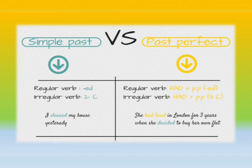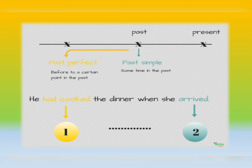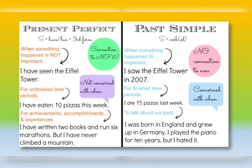The simple past versus the past perfect. Remember: simple past is a finished action in the past. The past perfect is an action that is finished before another action that is finished in the past. For example: I cleaned my house yesterday. She had lived in London for three years when she decided to buy her own flat. He had cooked the dinner when she arrived. What happened first? He had cooked the dinner — this is something that happened before another action in the past, which in this case is 'she arrived.' This is the past perfect.